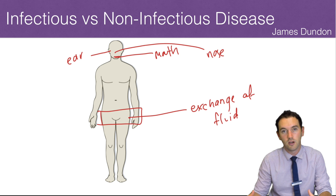Any way that we can get inside our body is going to be a way that these microorganisms can get in and start causing issues and multiplying. Pretty much everything that we use to fight infectious disease comes down to: one, try and prevent anything from getting inside our orifices, and then once they're in, try and support the body's natural processes of fighting disease. Hopefully that was a really good run-through of infectious versus non-infectious disease and how they come about, and we're going to tackle exactly how our body fights these in later videos.